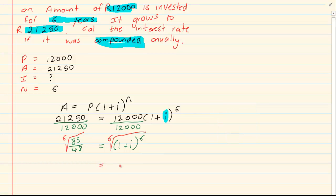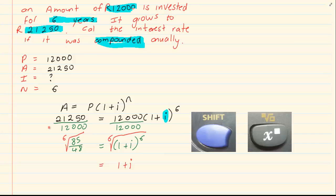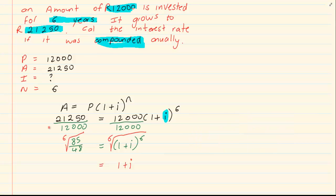So, what you would have had is 1 + I is equal to, and then you press this in your calculator. You are going to press shift and then you are going to press that specific root sign, and then you are going to press 6 on the top power, and inside you are going to press 85 over 48, which will give you 1.0999.